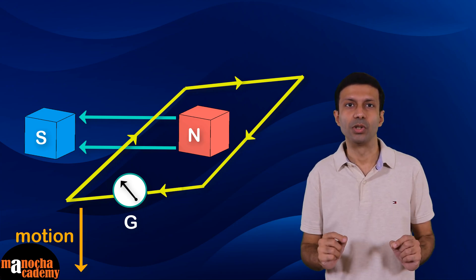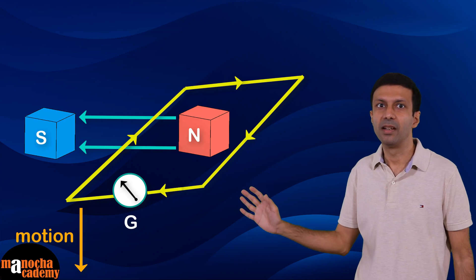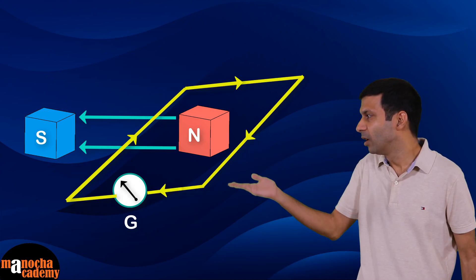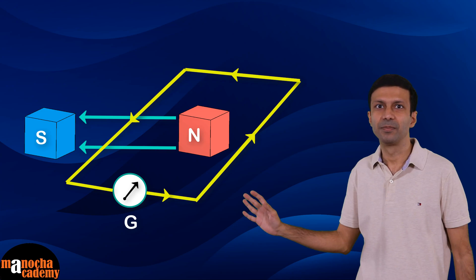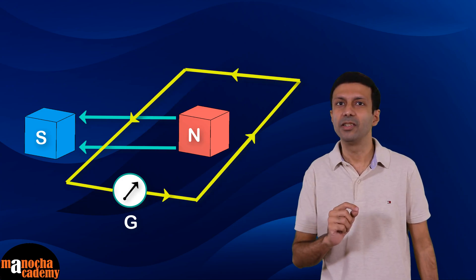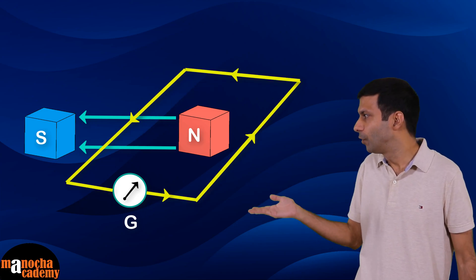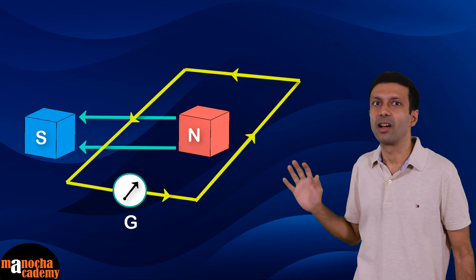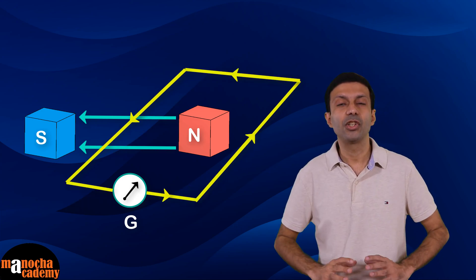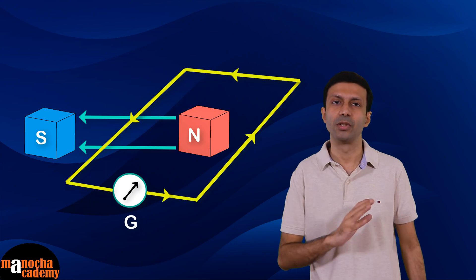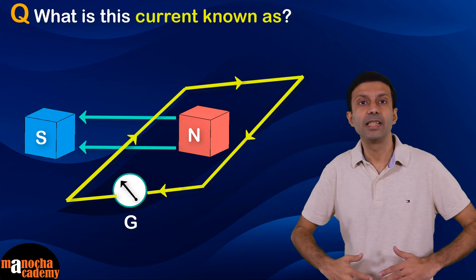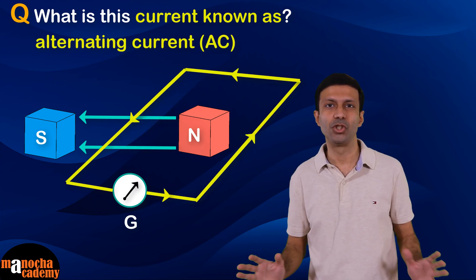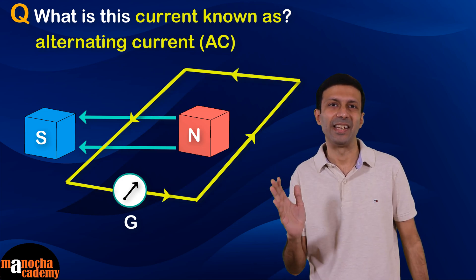This experiment shows that when a wire is in motion in a magnetic field, electric current is produced. If you move the wire up and down continuously, a continuous current is produced. When the wire moves up, current flows in one direction; when it moves down, current flows in the opposite direction. The direction keeps changing continuously — and this current is known as alternating current, or AC.